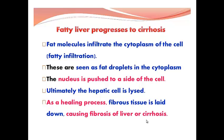Fatty liver progresses to cirrhosis. Fat molecules infiltrate the cytoplasm of the cell, seen as fat droplets, and the nucleus is pushed to a side of the cell. Ultimately the hepatic cell is lost. As a healing process, fibrous tissue is laid down causing fibrosis of the liver, or cirrhosis.